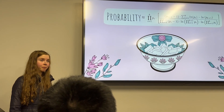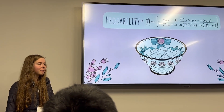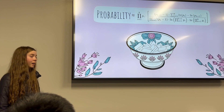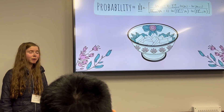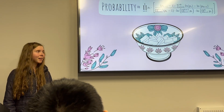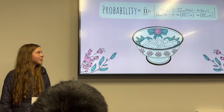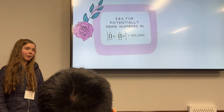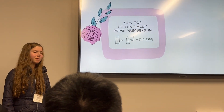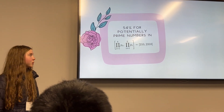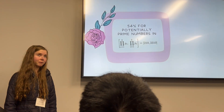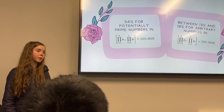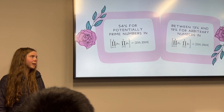Since these numbers survived the first k removals, we'd expect them to be more likely to be prime than some random number. Using the prime number theorem coupled with that second formula we derived, we find that the probability of a potentially prime number being prime is given by this formula. In other words, if we took all the potentially prime numbers in our interval, wrote them on little slips of paper, and put them in a bowl, that fraction tells us how likely it is that we'd draw out a prime number. If we evaluate that formula for k equals 4, we find that there is about a 54% chance of being prime for potentially prime numbers between the product of the first four primes and the product of the first five primes — significantly higher than the 13% to 19% likelihood for an arbitrary number in that same interval.